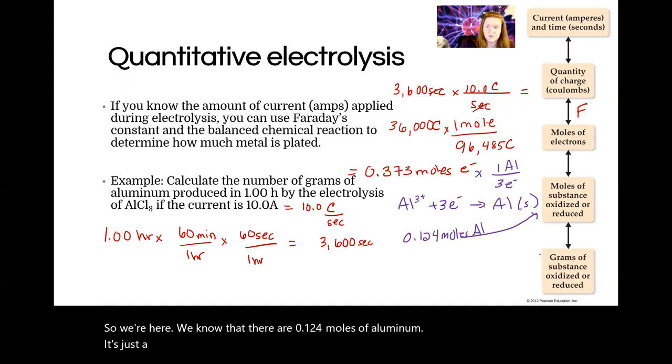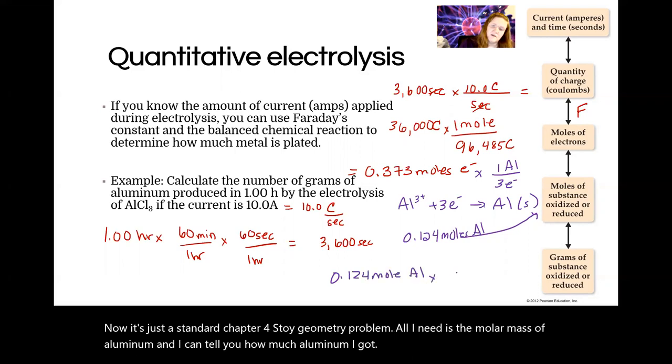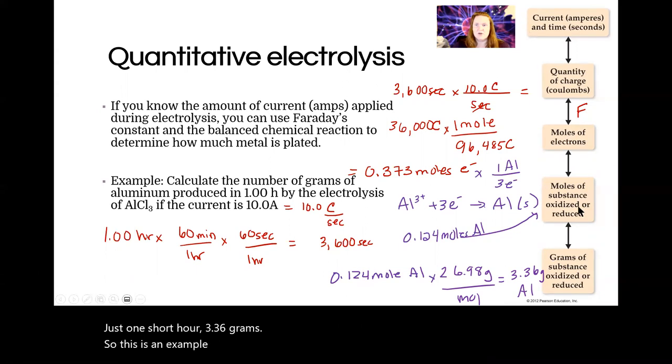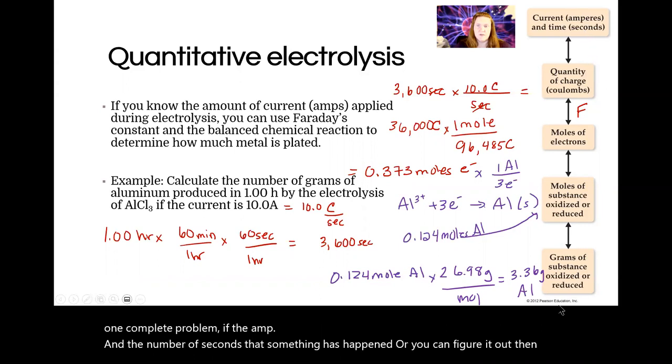So now we're here. We know that there are 0.124 moles of aluminum. Now it's just a standard chapter four stoichiometry problem. All I need is the molar mass of aluminum and I can tell you how much aluminum I got. I think it's about 26, 27 something. Okay, I looked. It's 26.98. I didn't want to be wrong about that. So 26. Oh my gosh. That's not a six. 26.98 grams for every mole of aluminum. So we end up with, in just one short hour, 3.36 grams of aluminum. Okay, so this is an example problem. They could start you at any point in this process, but this is one complete problem. If you know the amp and the number of seconds that something has happened, or you can figure it out, then you can figure out how many grams of that material will be produced.